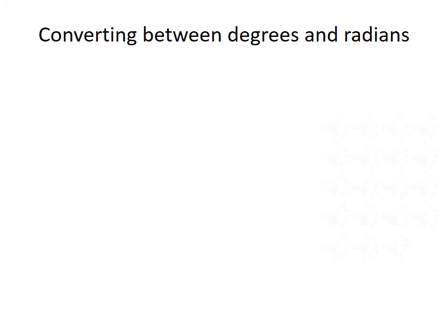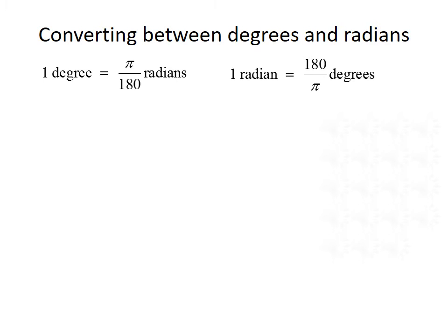Now let's talk about converting between degrees and radians. 1 degree equals π over 180 radians, so if we're converting from degrees to radians, we multiply by π divided by 180. And 1 radian equals 180 divided by π degrees, so if we're converting from radians to degrees, we multiply by 180 over π.